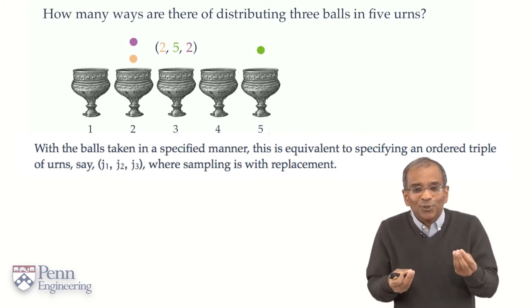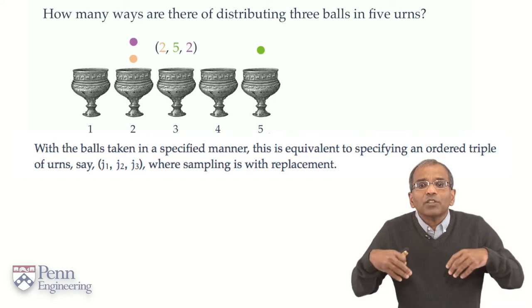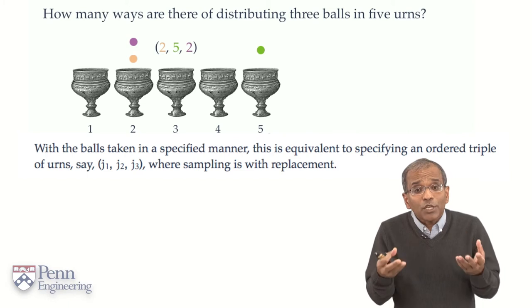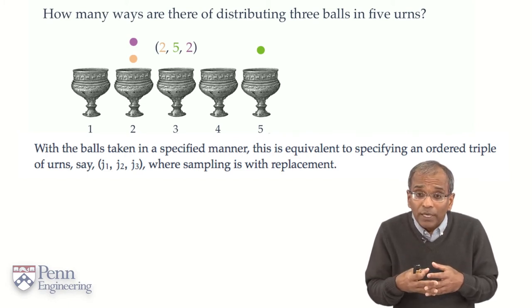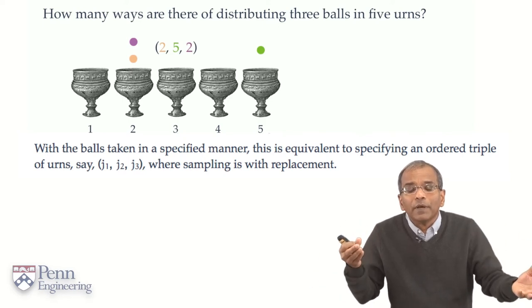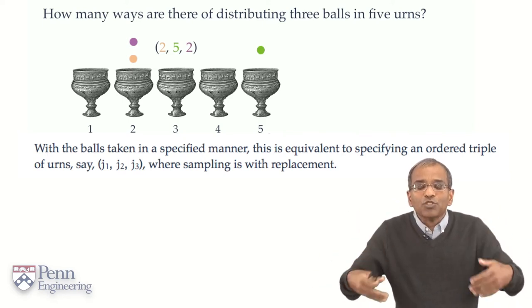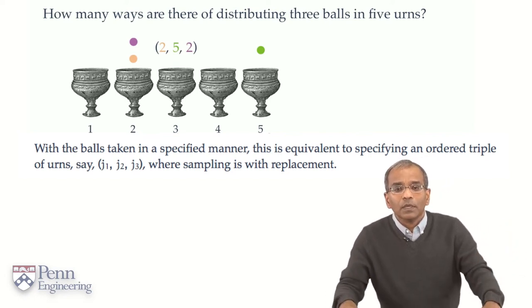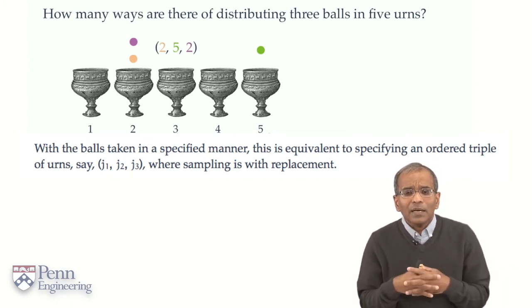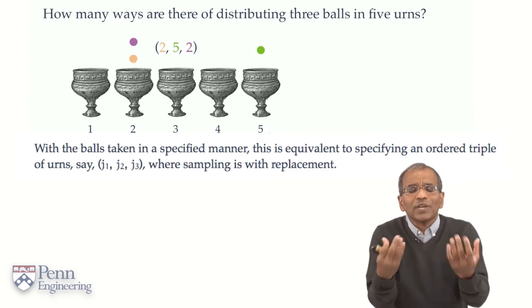In our case, two, five, two. In general, specify three numbers, three indices. Let's call them j1, j2, and j3. These three indices are numbers between one and five, and represent one at a time where each of these three balls have landed. Lovely. Now we have some abstraction. From here, suppose we ask, how many ways can we specify these three numbers?